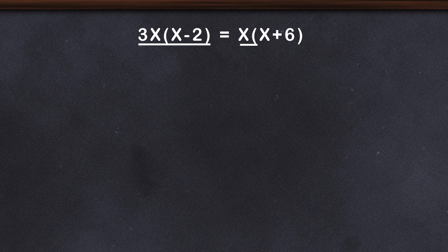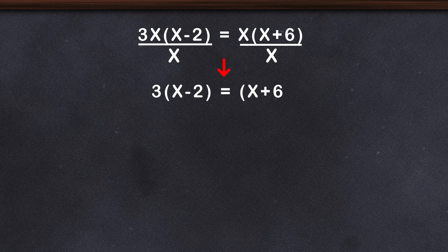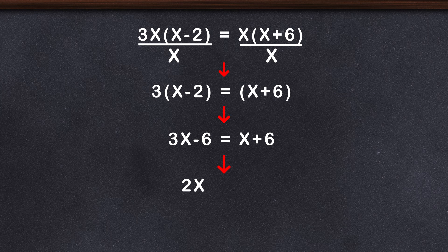Easy, right? Well, let's just divide both sides by x. 3(x - 2) = (x + 6). 3x - 6 = x + 6. 2x = 12. We get x = 6. This was a fast way to solve the question, but the solution is wrong.